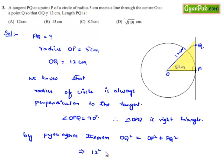So OQ² will be 12² which equals OP² which is 5², so that's 5² plus PQ². Let us note that 12² = 5² + PQ².